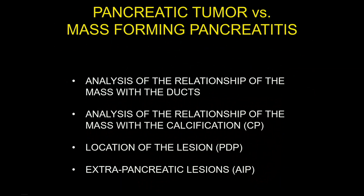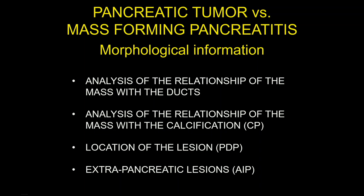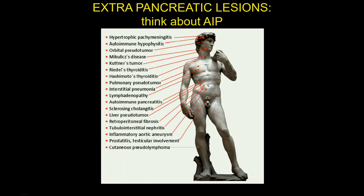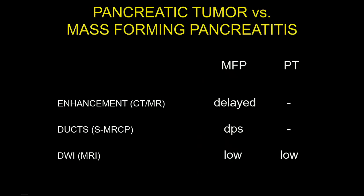Can we make a differential diagnosis? We need to consider all these conditions, the relationship of the mass with the ducts, the relationship with the calcifications, location of the lesion for paraduodenal pancreatitis, and extrapancreatic lesions for autoimmune pancreatitis. These are morphological information. The presence of extrapancreatic lesions suggests autoimmune pancreatitis — look at the kidneys, the biliary tree, and the retroperitoneum. Delayed enhancement is typical in mass-forming pancreatitis and not in pancreatic tumor.